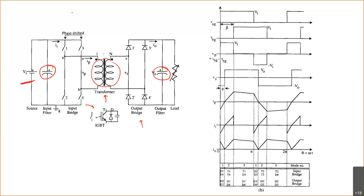Assuming a 1:N transformer, we can define the duty ratio. The formula for output voltage V0 is: D = V0 / (N · Vi). So the duty ratio D equals V0 divided by N·Vi. Generally, if D is less than 1 it is a buck operation, and if D is greater than 1 it is a boost operation.